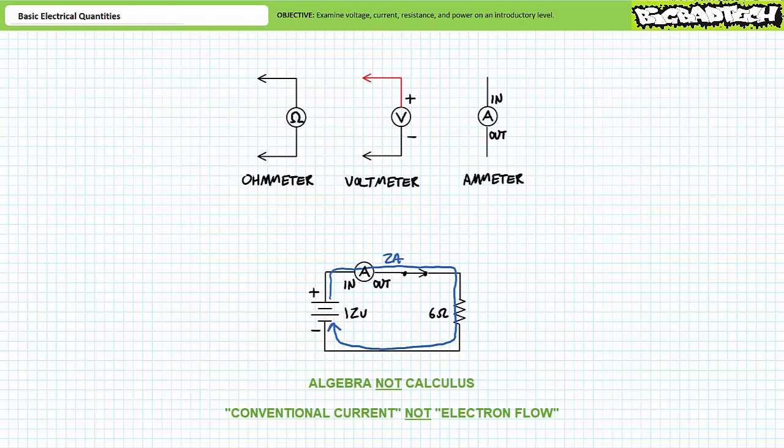It's just that the accepted convention of flow is positive to negative and that's the way your meter is going to read it and that's how we are going to talk about it for the remainder of the basic electronics series because that's the convention, meaning it is the accepted standard.